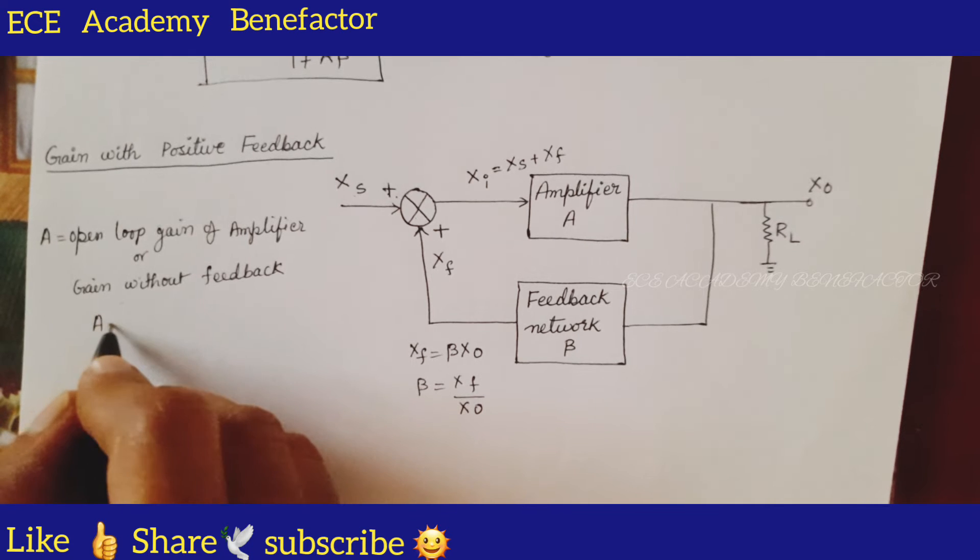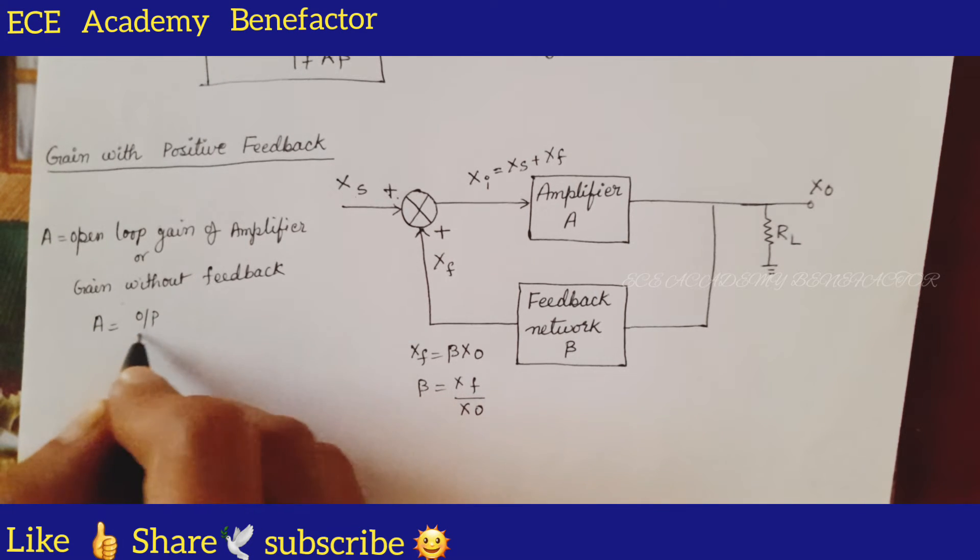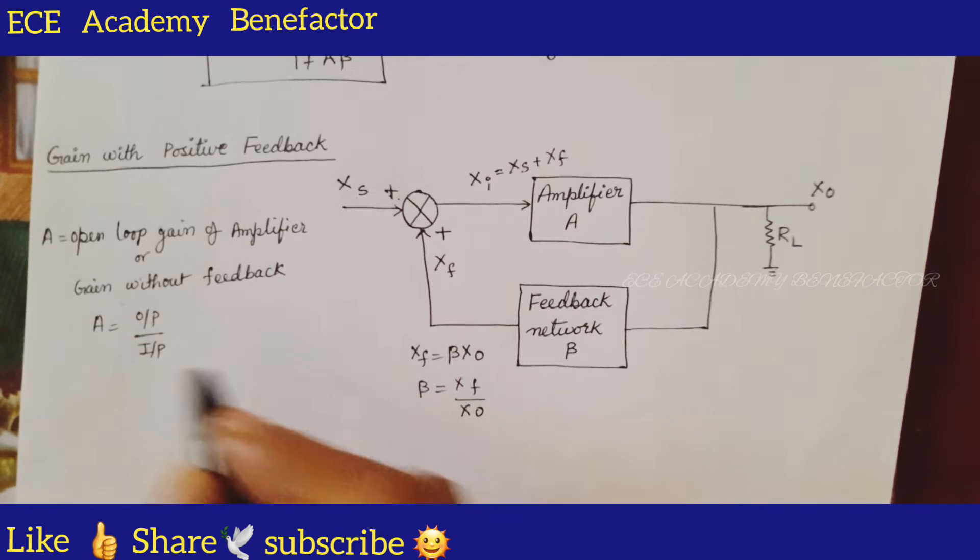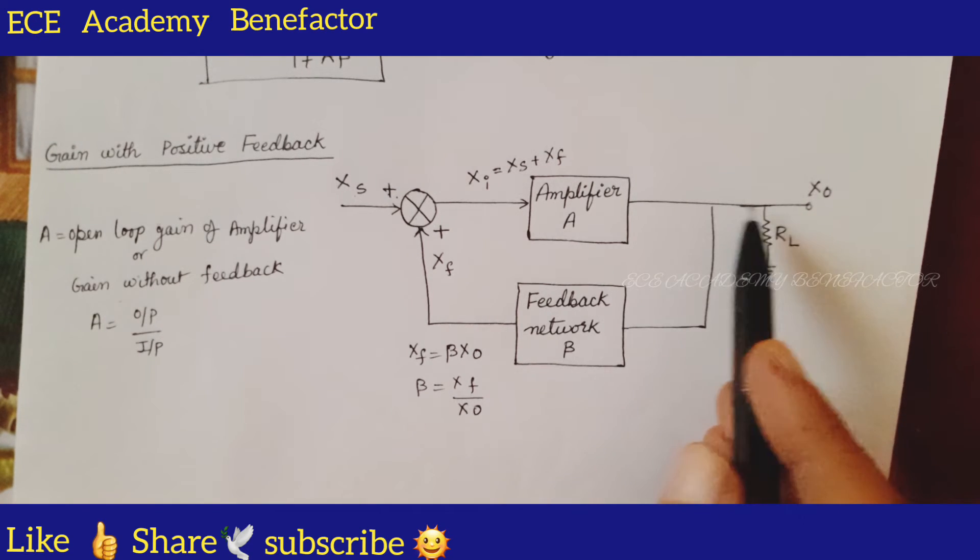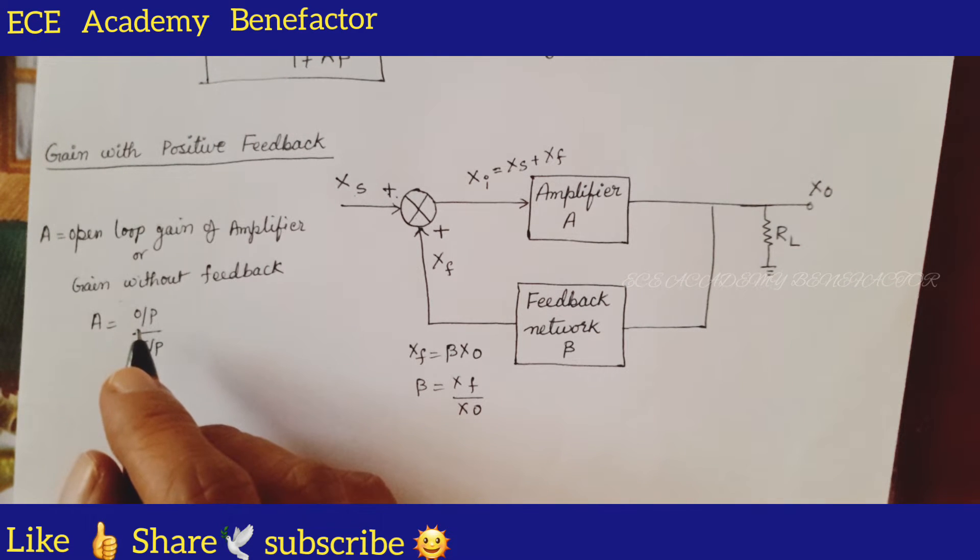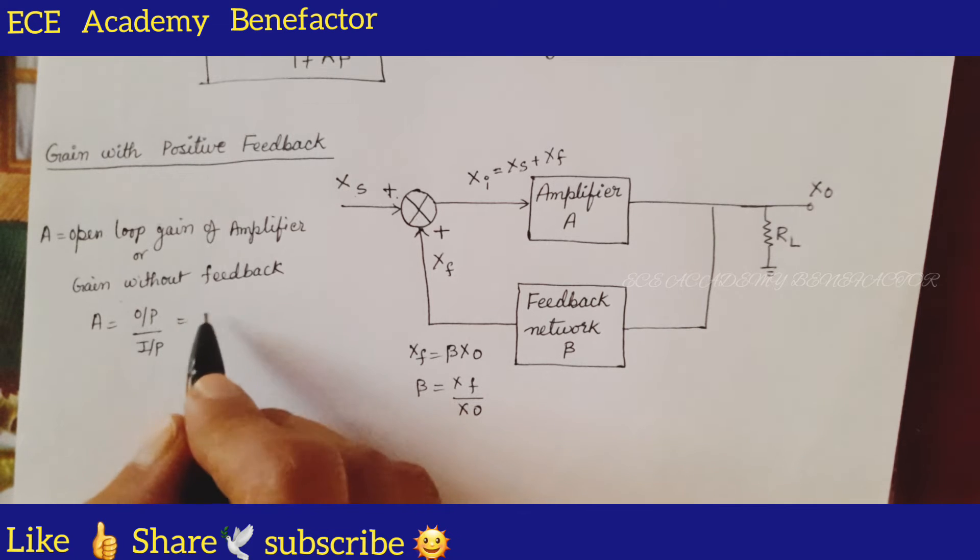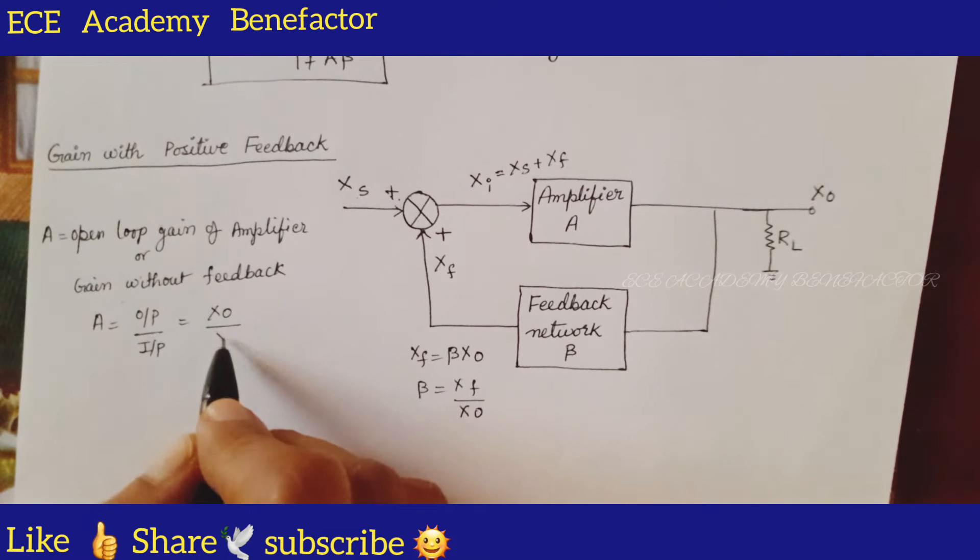What is A equal to? Output by input. Here the output is Xo and input is Xi, so Xo by Xi.